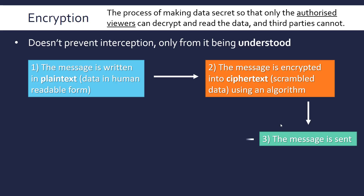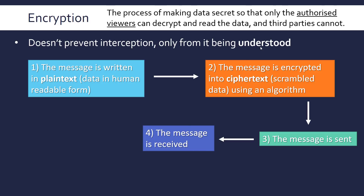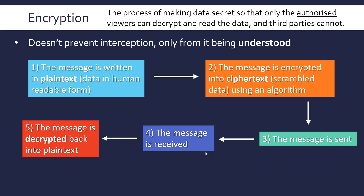The message then gets sent across the network and is received at the other end — either by the intended recipient or a third party. If a third party receives it, they don't know what to do with it. But the person who is meant to receive it can decrypt it back into plain text, because they effectively know the reverse of the algorithm. Only the authorised person will be able to decrypt and read it.